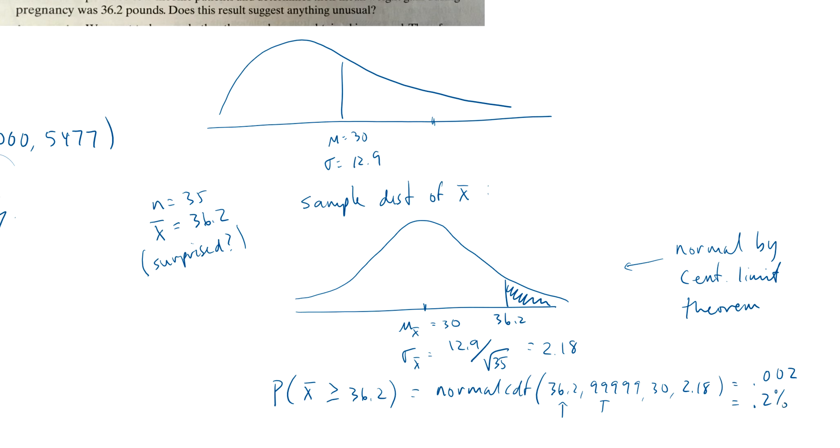So the question asked, does this suggest anything unusual? And the answer is, yeah, that seems pretty unusual. Because it only has a 0.2% chance of getting 36.2 or bigger. So yes, I'm very surprised that that happened.